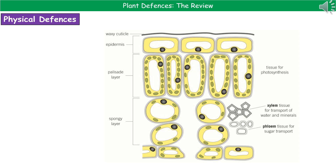What we've got here is a cross section through the leaf of a plant, with a few key defense mechanisms labeled. At the very top you can see the waxy cuticle — a key physical defense above the epidermis. Below that are the epidermal cells, then the palisade cells packed full of chloroplasts, then the spongy mesophyll layer with gaps between the cells. You'll also find xylem, which transports water and minerals, and phloem, which transports sugars, plus the lower epidermal cells including the guard cells and the stomata. This is a recap of our earlier topic on plants.